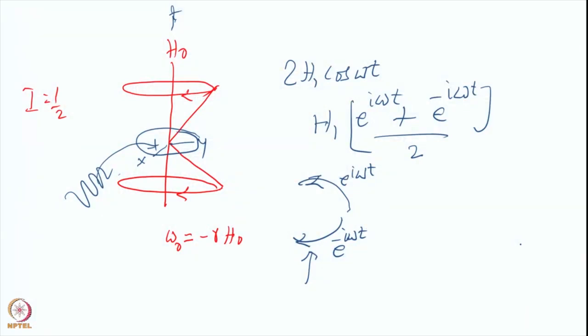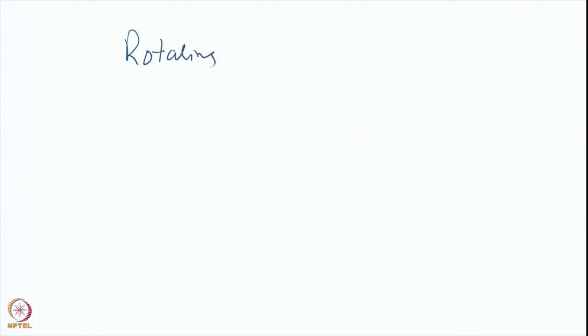We continue from the description of the application of the RF. We said there are two components of rotating magnetic fields: one going in the same direction as the precessional motion and the other going in the direction opposed to the precessional motion. We consider that particular component which is in the same direction. To understand this interaction, we go into the rotating frame — the rotating frame of RF.